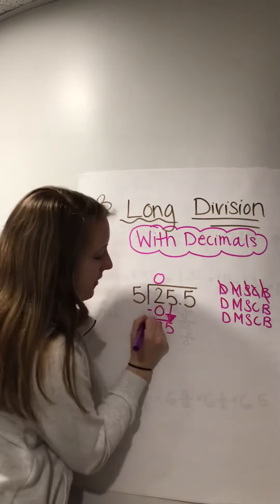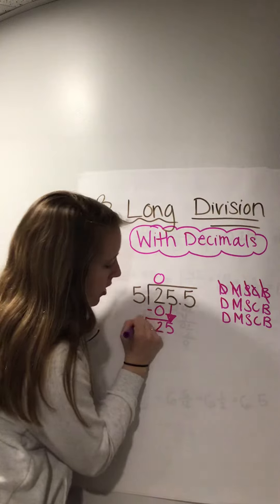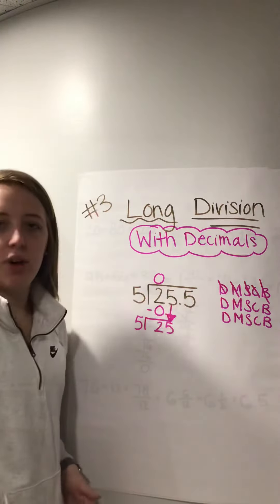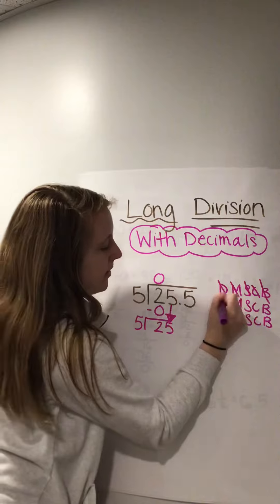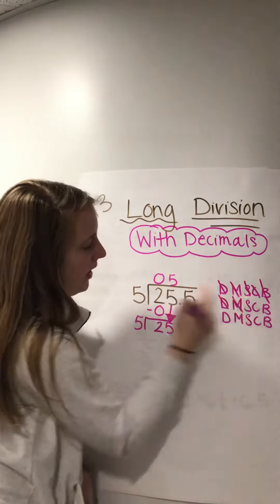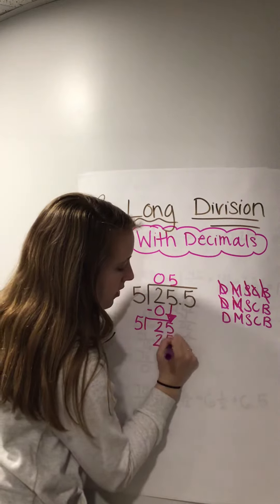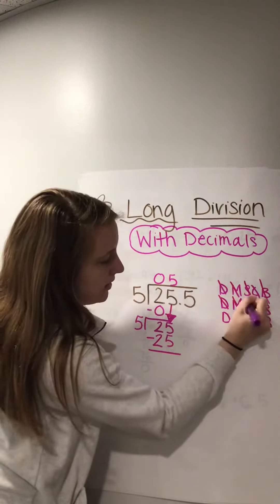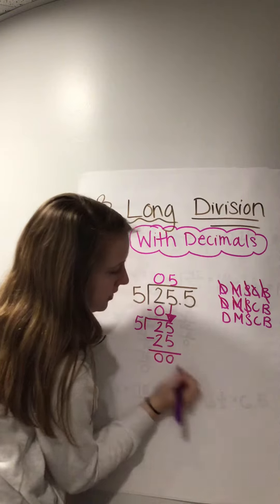Now you're going to divide back to the top. Five into 25 — how many times can five go into 25? Five times. So I'm going to put the five at the top. Multiply — five times five is 25. Subtract — five minus five is zero, two minus two is zero.